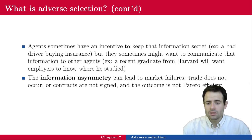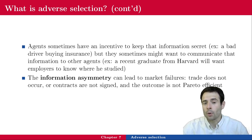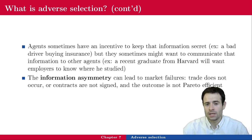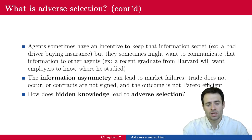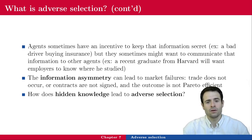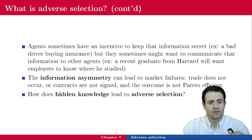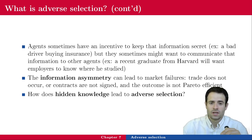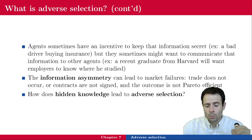The information asymmetry can lead to market failures: trade does not occur or only partially occurs, contracts might not be signed, and the outcome might not be Pareto-efficient. So, how does hidden knowledge lead to adverse selection? Here we are violating the perfect information assumption usually required to have perfect competition. As I mentioned in the very first lecture about competitive markets, each of these conditions are required for the outcome to be Pareto-efficient. If one of them is violated, then we have a market failure. Today, we are going to violate the perfect information assumption and see what the problem is going to be.